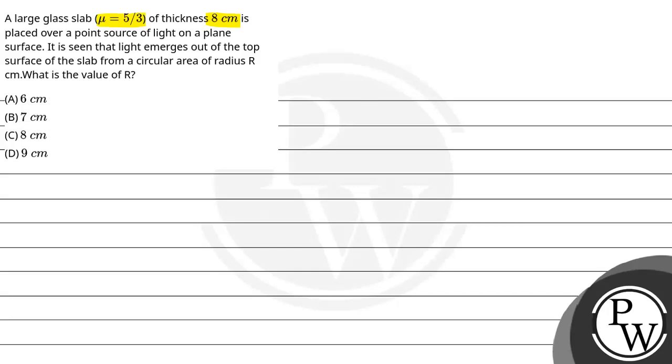It is seen that light emerges out of the top surface of the slab from a circular area of radius r cm. What is the value of r?